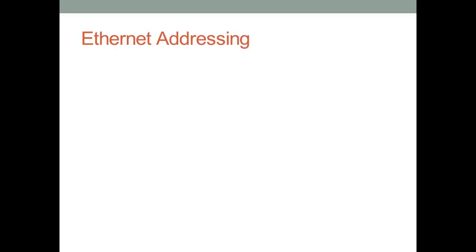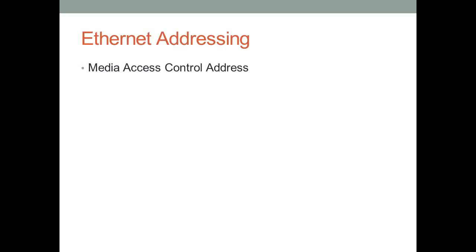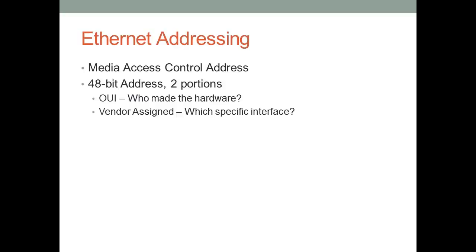Ethernet addressing uses a Media Access Control (MAC) address, also called a burned-in address. This address is 48 bits long and has two portions. The first 24 bits — the first three bytes — are called the Organizationally Unique Identifier (OUI), which identifies who made the hardware. By looking at a MAC address prefix during packet captures, you can identify the manufacturer — for example, recognizing an Apple MacBook Air.